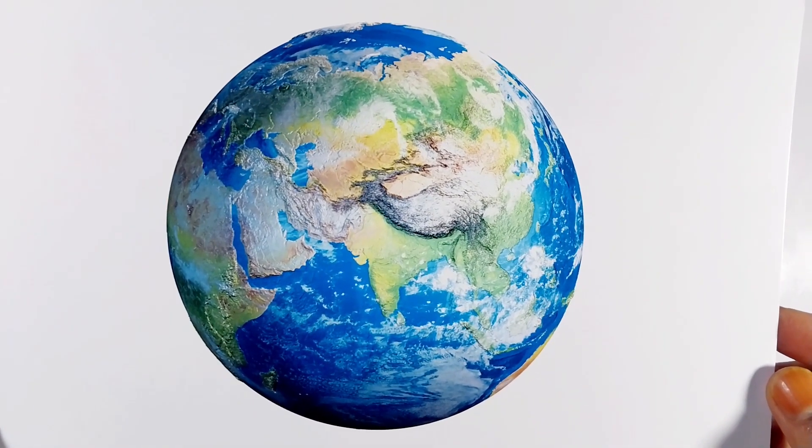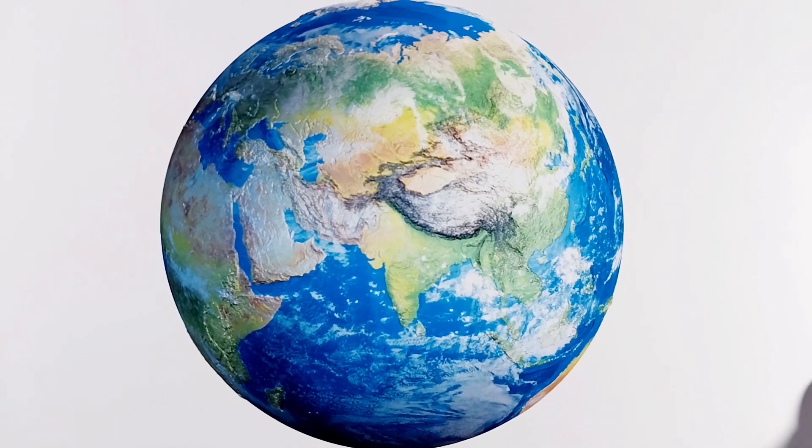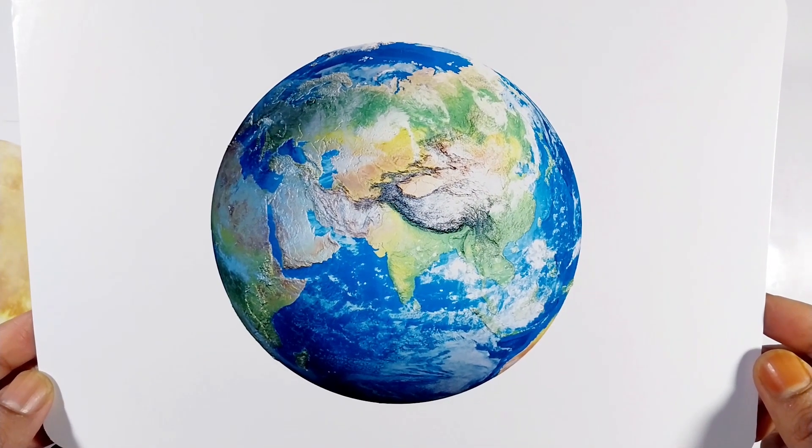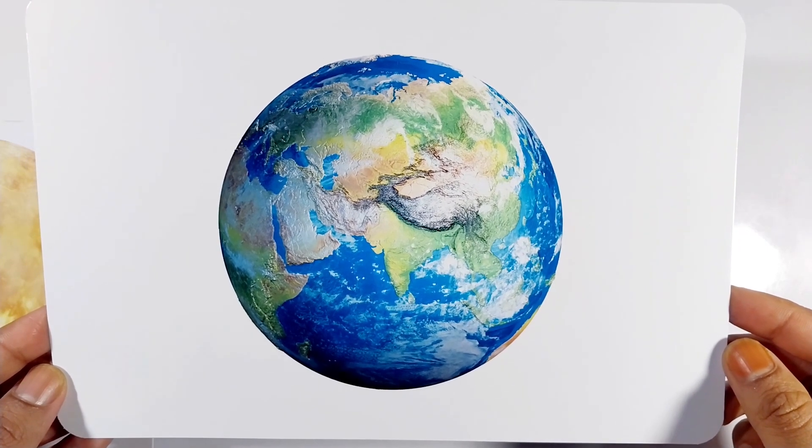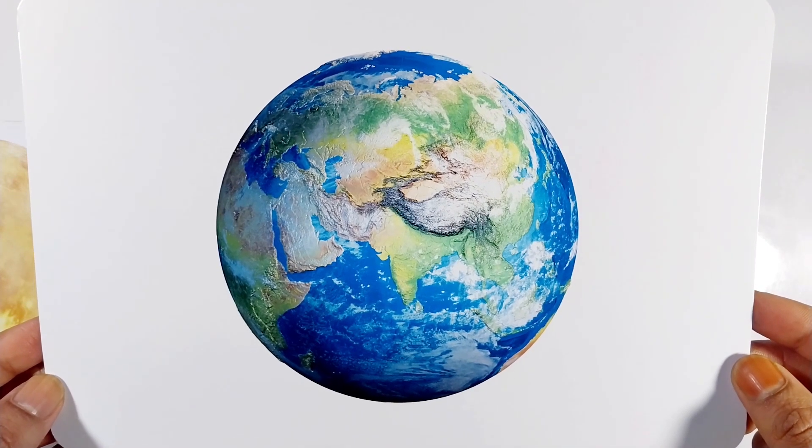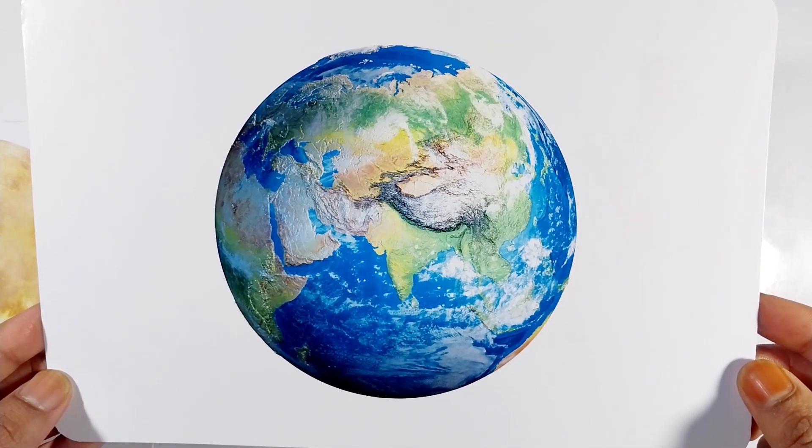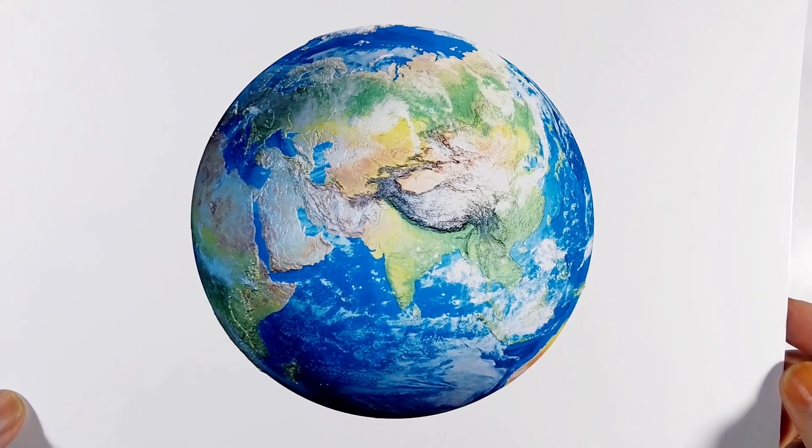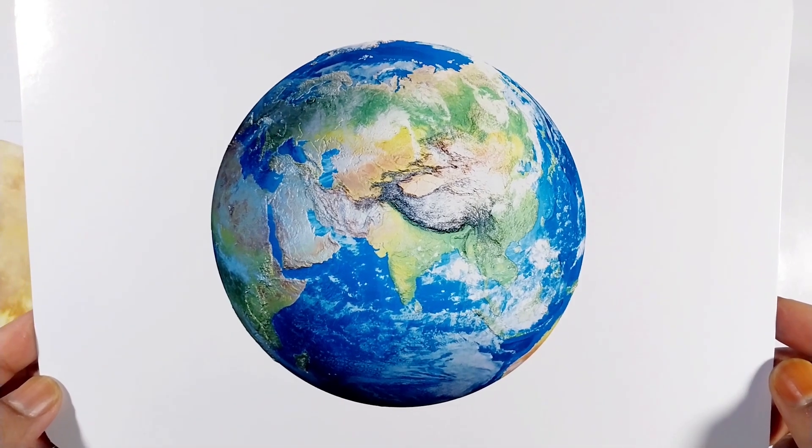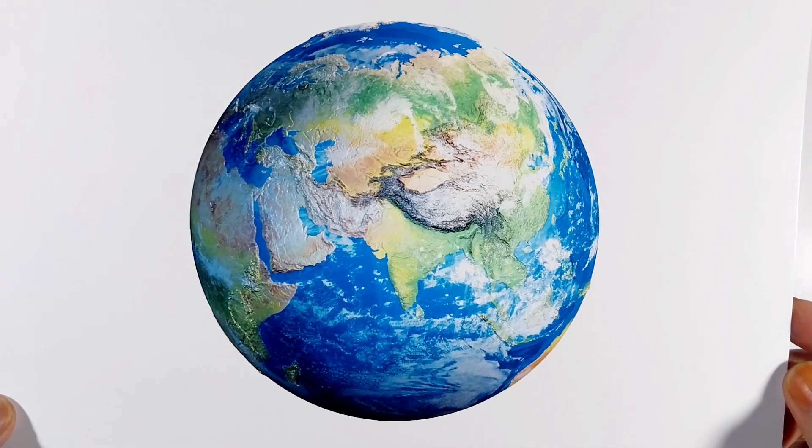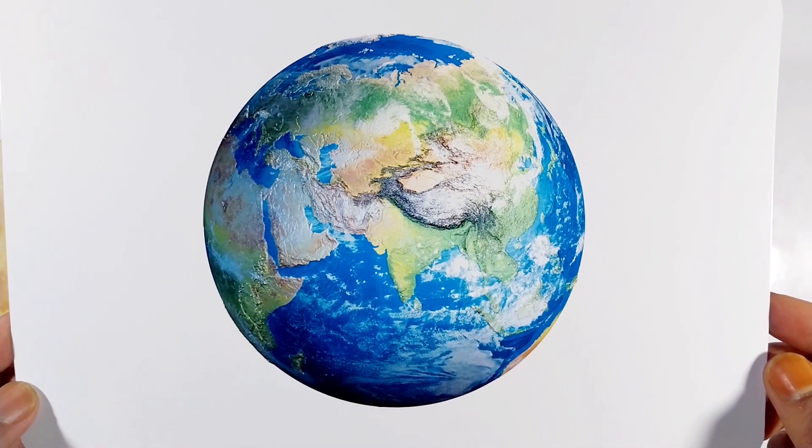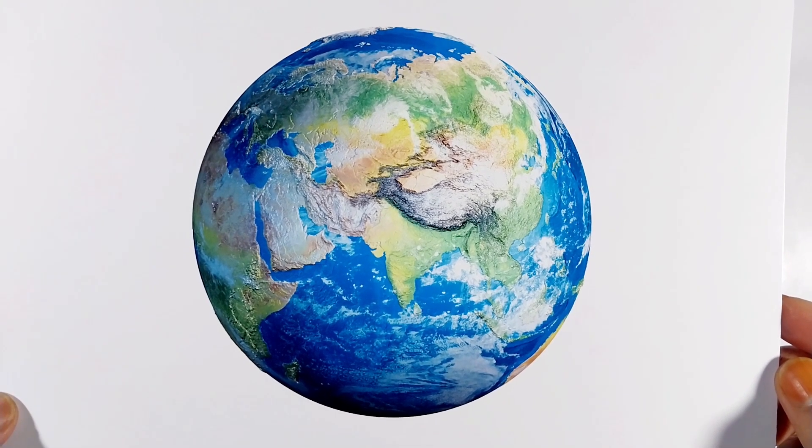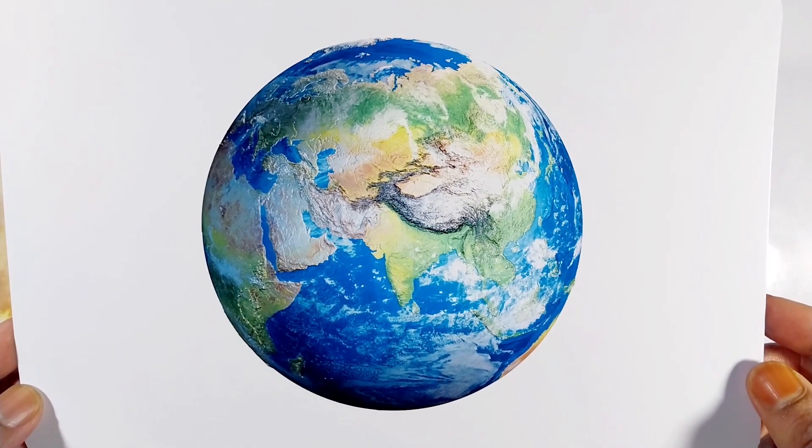Earth is the third planet from the sun and the only known planet to support life. It has vast oceans, diverse landscapes, and a protective atmosphere that makes it unique in our solar system. Home to millions of species, including humans, Earth is often called the blue planet because of its oceans seen from space.